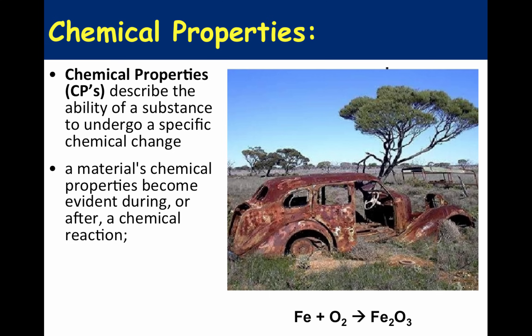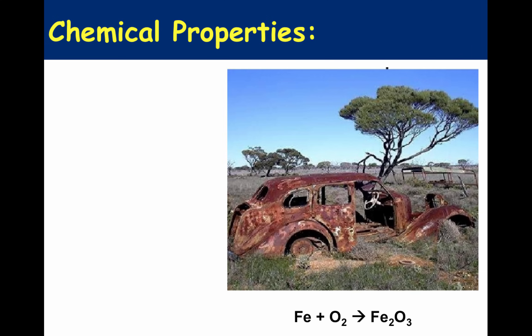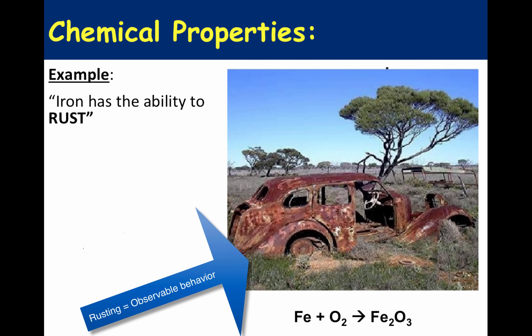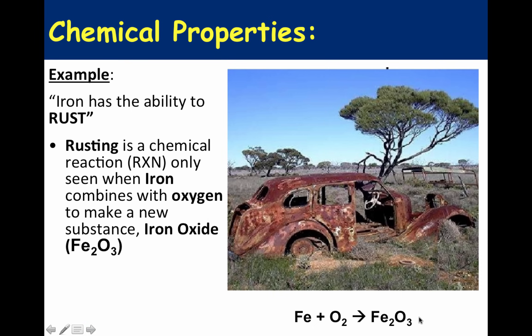Take this car for instance — it's rusted. The ability to rust is a chemical property of iron. We are describing iron's behavior and its tendency to undergo a reaction. In this reaction, iron combines with oxygen to make iron three oxide — a product that is different from the original iron. We've essentially made something new, so a chemical property only reveals itself when a chemical reaction occurs.